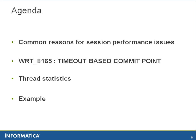The agenda for the talk is as follows. First we will look into the common reasons that would cause performance issues in a Power Center session. We will follow up with one of the common messages you would see in the session log when there is slowness in session run compared to a normal run, which is WRT_8165 timeout-based commit point. We will then look into the thread statistics printed in the session log, which will provide deep insights as to which threads took longer and point specifically towards the area where the bottleneck could lie. We will follow that up with an example from a specific case to help find and rectify a bottleneck so that performance is back to normal.